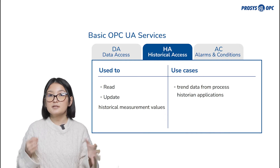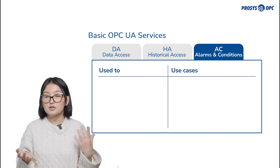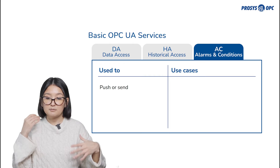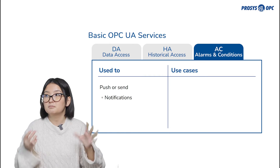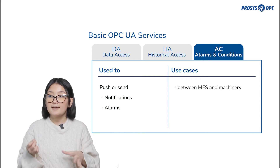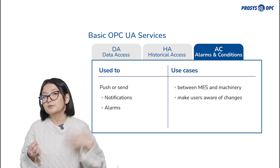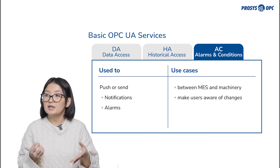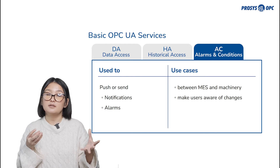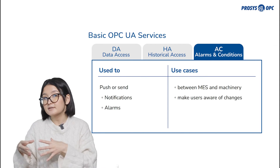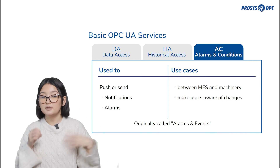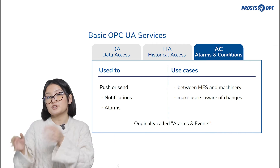Last but not least is Alarms and Conditions, and those are used to send messages between applications — for example, a production report from MES to machinery or any kind of device. Alarms are also used to make users aware of any possible changes in values or processes. In OPC Classic, this basic data model was called Alarms and Events, but since events became a core part of OPC UA, the model has been renamed to Alarms and Conditions.